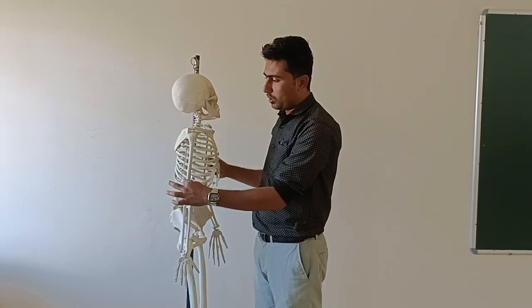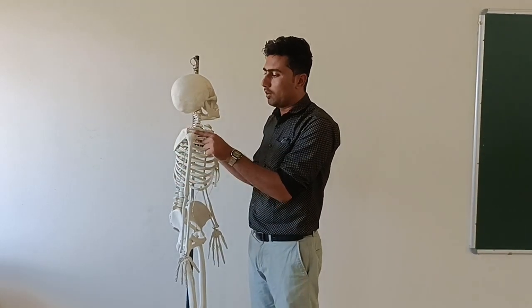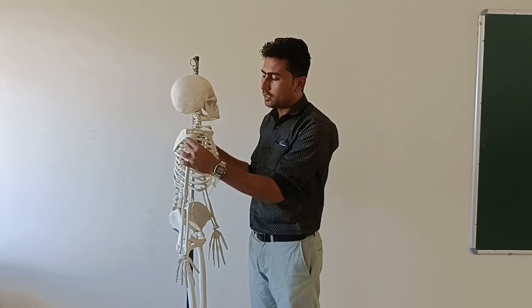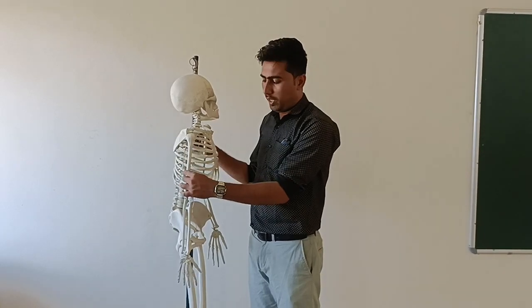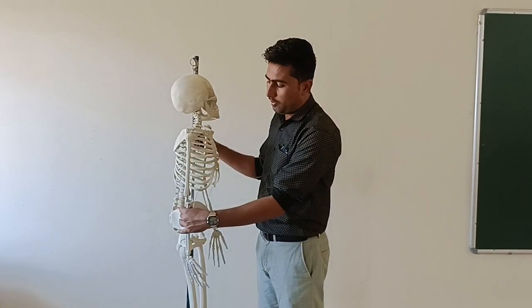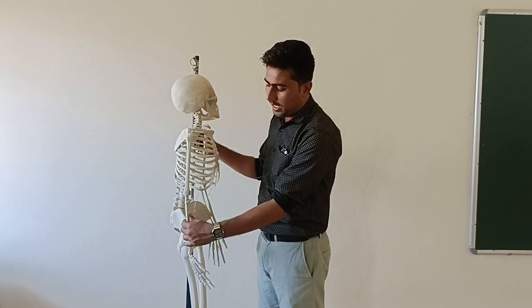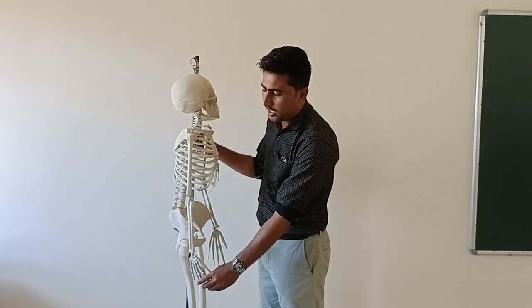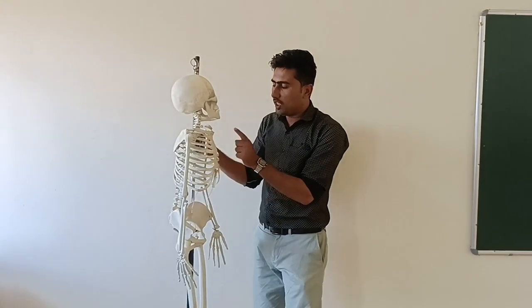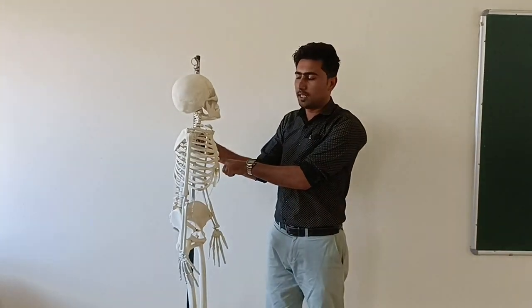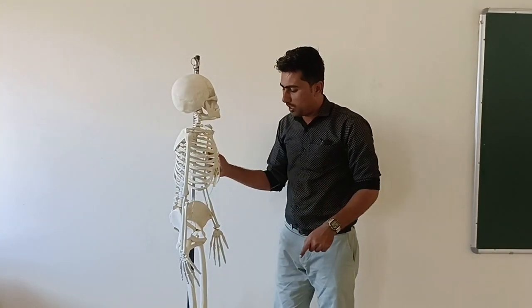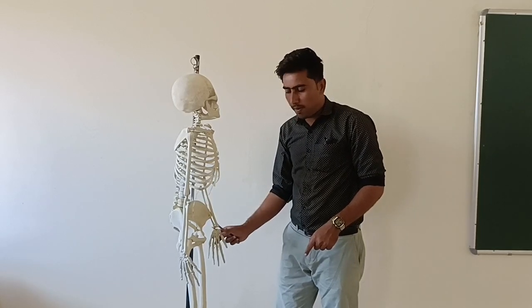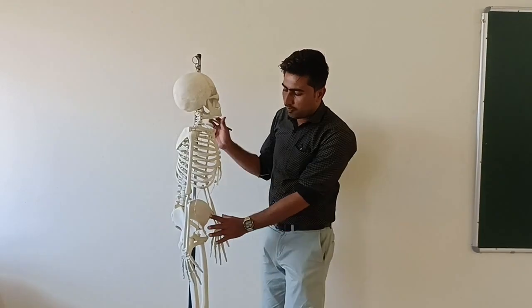These two bones make one shoulder joint. This is known as the humerus. After that we have the radius and ulna, carpal, metacarpal, and phalanges. The same bones are repeated on the other side also: humerus, radius and ulna, carpal, metacarpal, and phalanges.